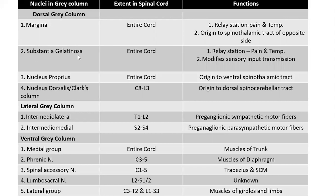Substantia gelatinosa is the group of nuclei present just below the posteromarginal nucleus, also present over the entire cord, and is related to sensory input transmission. Next, nucleus proprius is located below the gelatinosa, also extends over the entire cord, and gives rise to the ventral spinothalamic tract. Keep in mind that spinothalamic tracts are ascending sensory tracts arising from the spinal cord moving upward toward the brain.